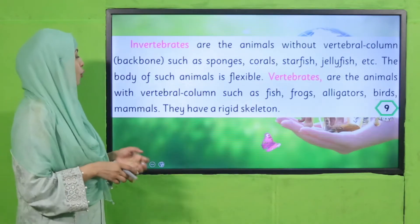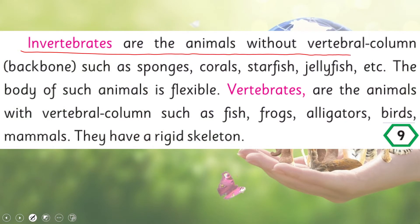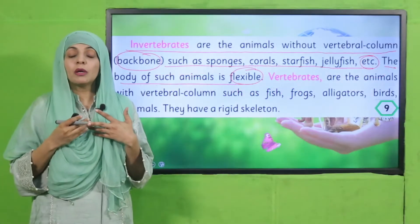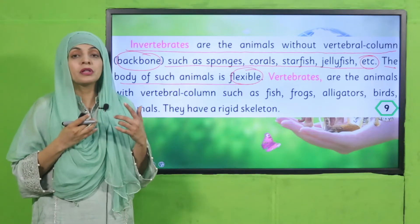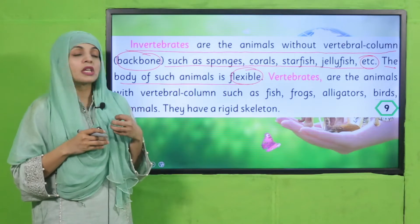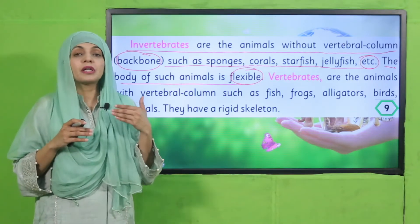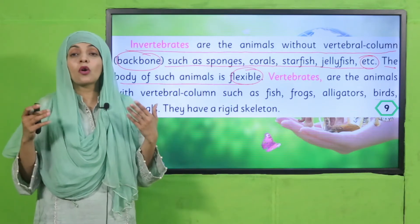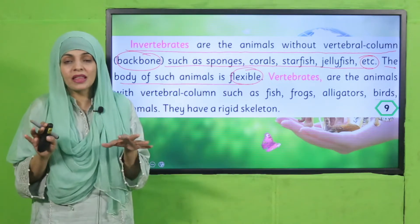Invertebrates are animals without a vertebral column or backbone, such as sponges, corals, starfish, and jellyfish. The body of such animals is flexible. Other examples include insects such as cockroaches, beetles, flies, and mosquitoes. These are all invertebrates because they have no bones and no vertebral column in them.